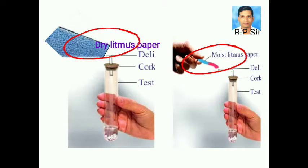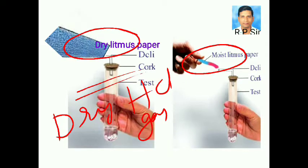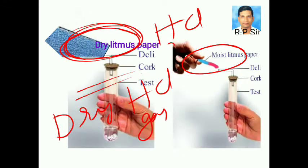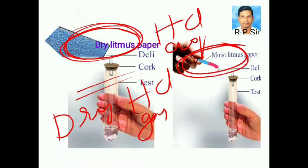Thus, we can conclude that dry HCl gas is not an acid because there is no change in color of dry litmus paper. But HCl aqueous solution is an acid because wet blue litmus paper turns into red.